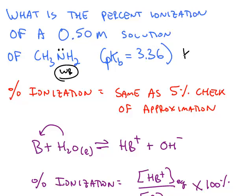So we can calculate the KB, which would be 10 to the negative PKB. In this case, that is 4.37 times 10 to the negative fourth.